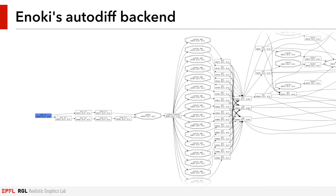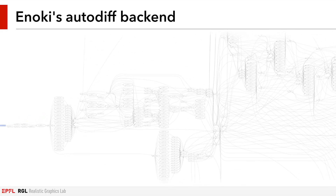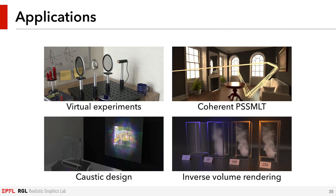In practice, the computation graph becomes extremely large for the kind of simulations we are interested in running, actually much larger than shown here, and the kernels that the JIT compiler generates can be hundreds of thousands of lines long. We periodically simplify this graph to keep memory usage in check. I will now hand over to Delio, who will present several applications that show what's possible with this system.